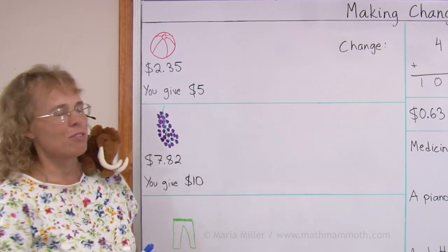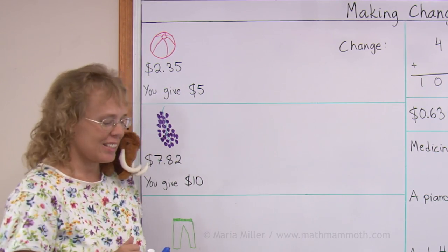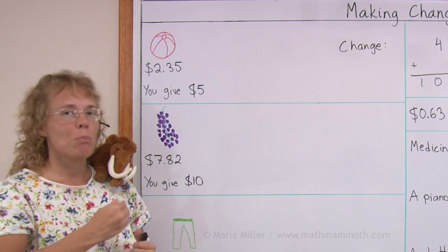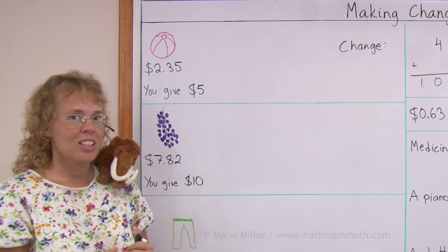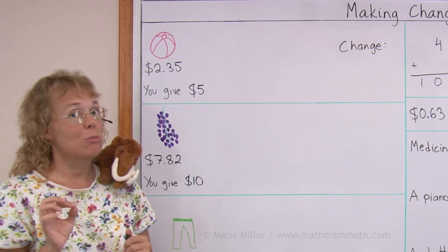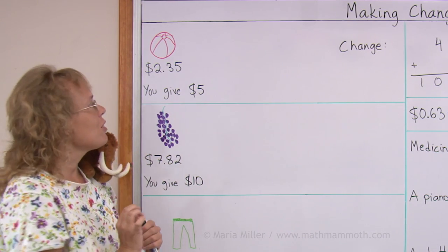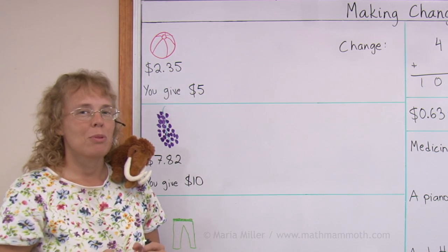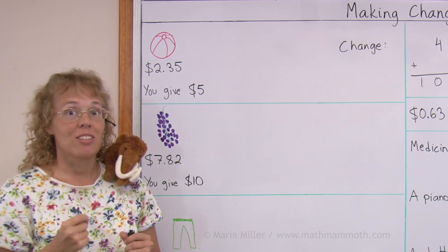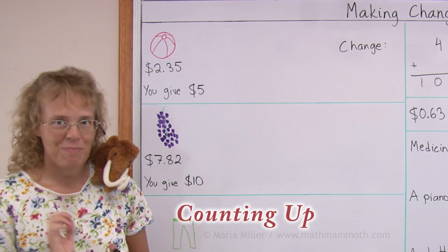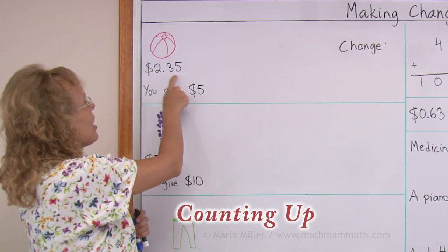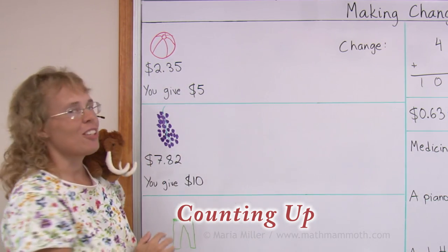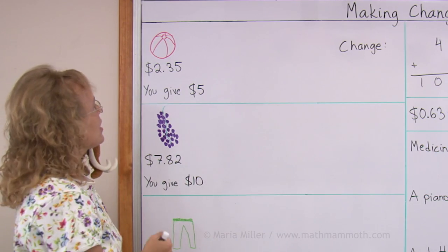Let's say you buy this beach ball for $2.35 and you give $5. So you're giving more money than what it costs, and then the clerk or the shopkeeper will give you some change. He will give you the difference of these two amounts. But in this problem we're going to study a method for finding the change which is called counting up. And that means that we start with this amount and we count up until we reach $5. This is how it goes.